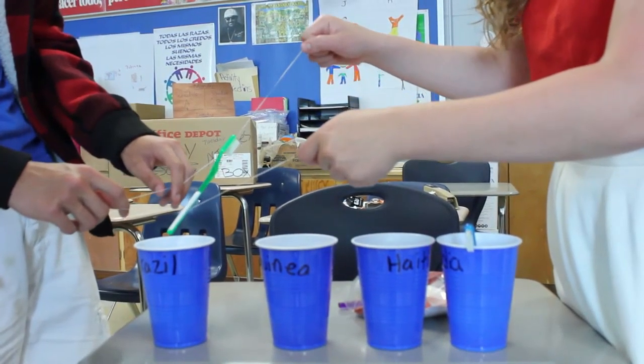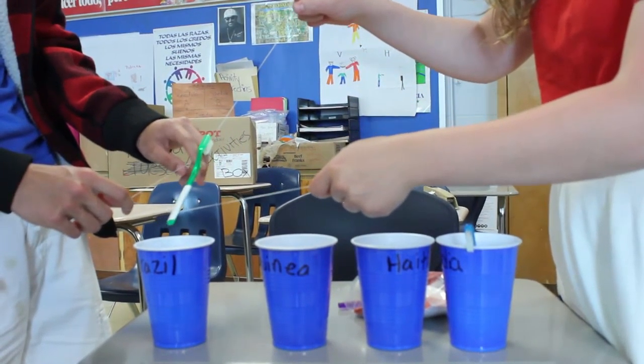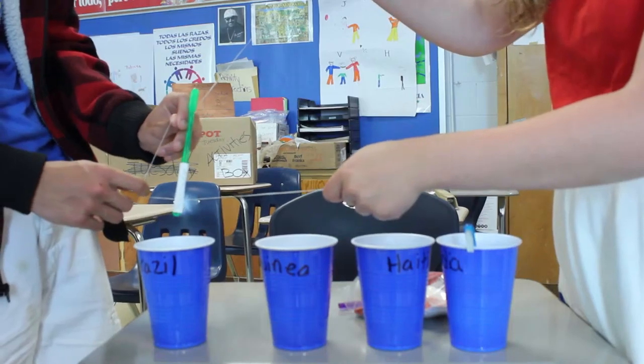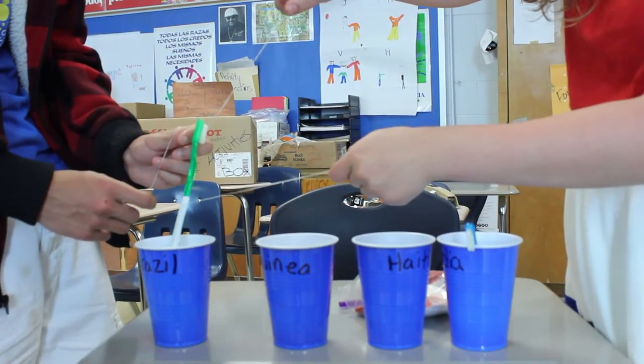The agents will get two strips of floss, stand across from each other and balance the toothbrush on the floss and manipulate the floss in order to move the toothbrush into the cup.